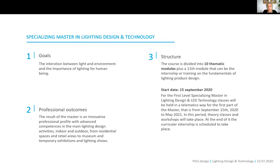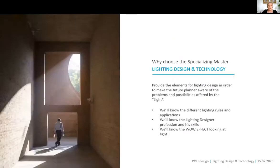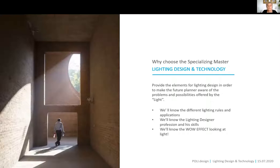After the coursework we will have a curricular internship, which is another important moment of this Master's. During the Master we will study lighting theory — a topic without which it's not possible to become a lighting designer. We will learn the difference between good and bad lighting, and the difference between objective and subjective lighting.